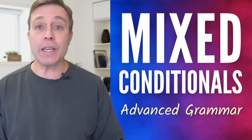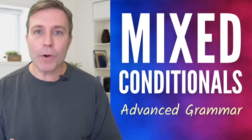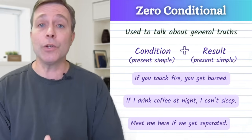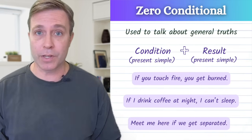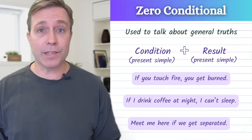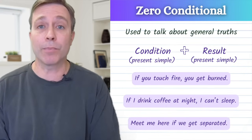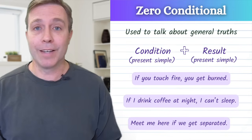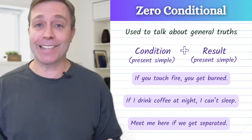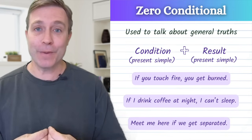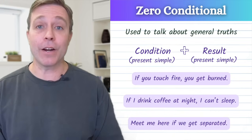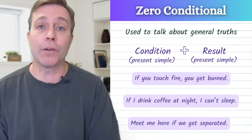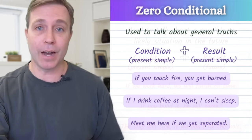Before we get into the mixed conditionals, I want to go over all of the conditional forms. Let's start with the zero conditional. This is used to talk about general truths. The condition uses the present simple and the result also uses the present simple. For example: if you touch fire, you get burned. If I drink coffee at night, I can't sleep. Or: meet me here if we get separated — notice the result comes before the condition with no comma.